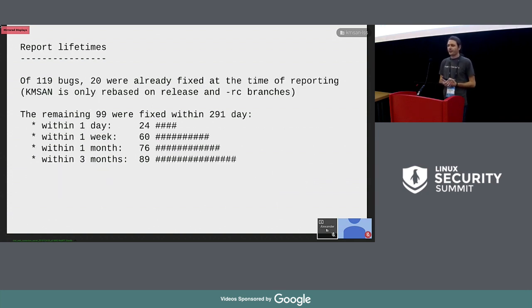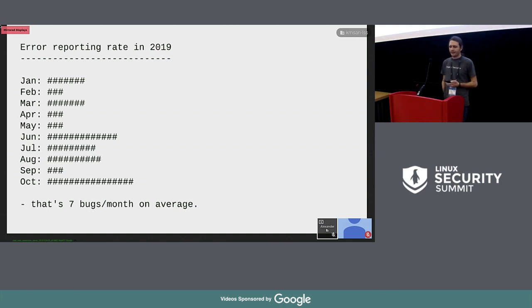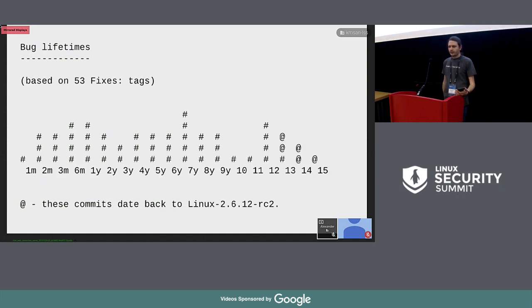Most of the bugs we found are fixed within one week. Some, however, take 10 months or more to fix. Here are the bugs that have been reported this year — on average, KMSAN reports about seven bugs a month. We don't have much data about bug lifetime, but based on 53 fix tags, we can see that the lifetimes of bugs are almost uniformly distributed within one year and 14 years.